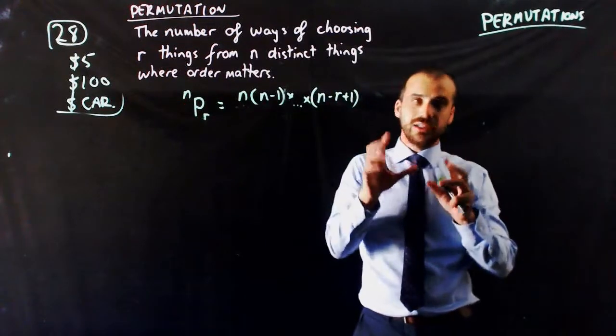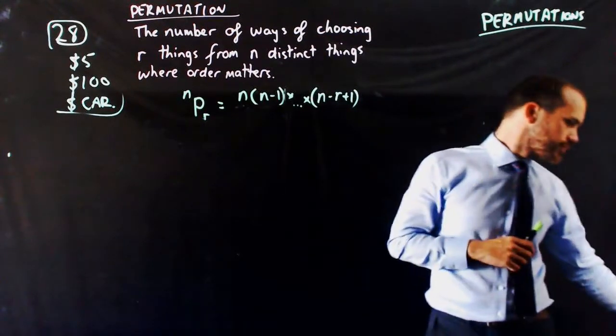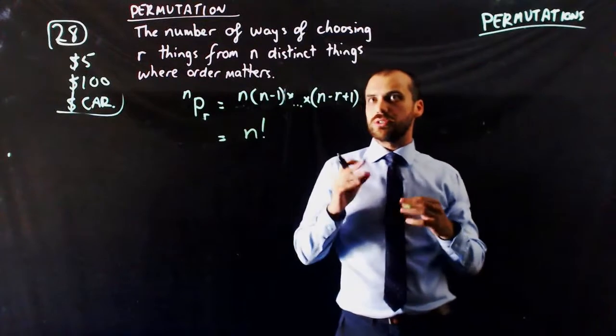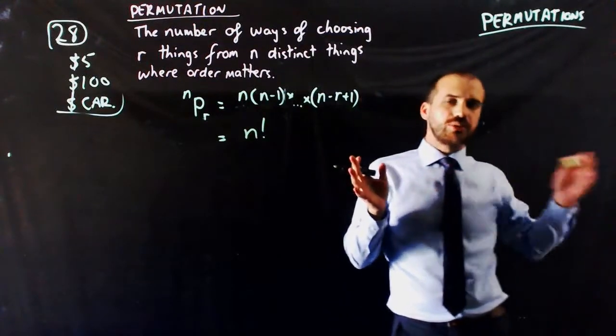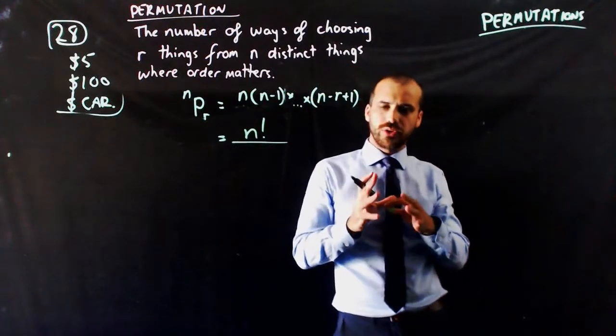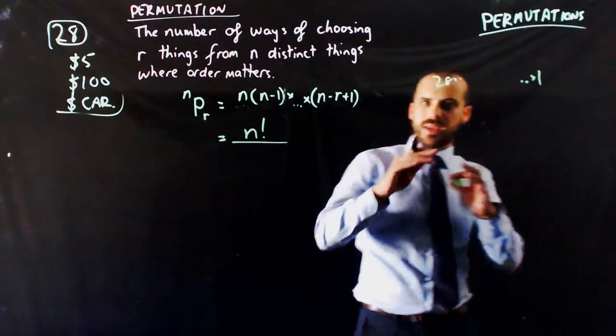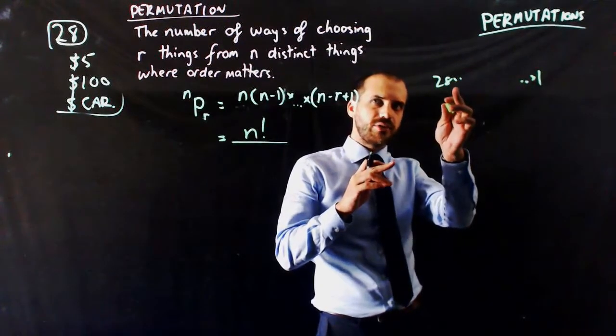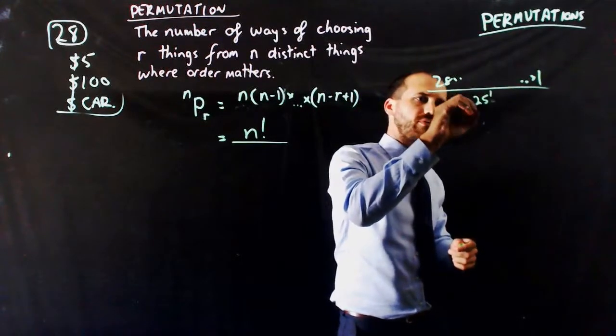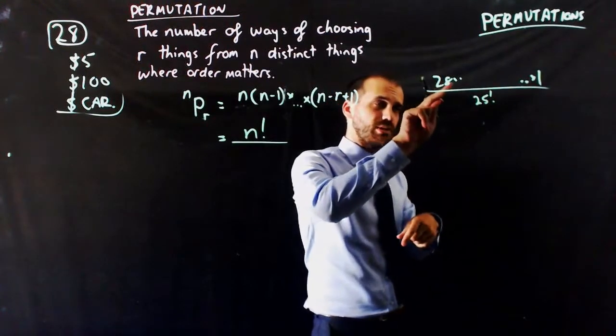But that formula is ugly. You can probably guess that we can make it neater with factorials. So, what we can do is do it as n factorial, which in that specific instance is 28 times all the way up to 1, and then think about what we want to do. We want to do 28 times 27 times 26. So, we need to divide that by 25 factorial. If we divide it by 25 factorial, all we'll have left is 28, 27, 26.